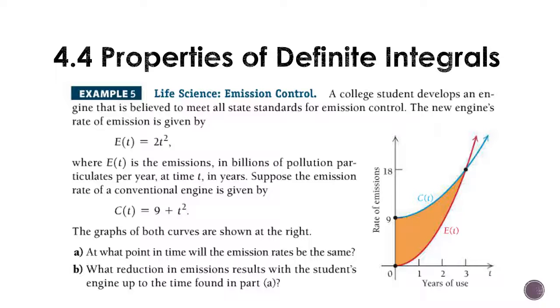Now, let's try an application problem. A college student develops an engine that is believed to meet all state standards for emission control. The rate is given by E of T equals two T squared, where E of T is emissions. Suppose the emission rate of a conventional engine is given by C of T equals nine plus T squared, and we have the two graphs. So, you see that the conventional engine, for the most part, has a higher rate of emissions, up to a point, to about three years of use. At what point in time will the emission rates be the same? So, I said about three years. Really, what you're going to do is set the two equations equal and solve and find for sure what that T is and what reduction in emissions results with the student's engine up to the time found in Part A. So, find the time where they meet at Part A, and then what you're going to do is you're going to take the integral of C of T minus E of T from zero to that time you found in A. Pause the recording, give it a try, and resume to check your answer.